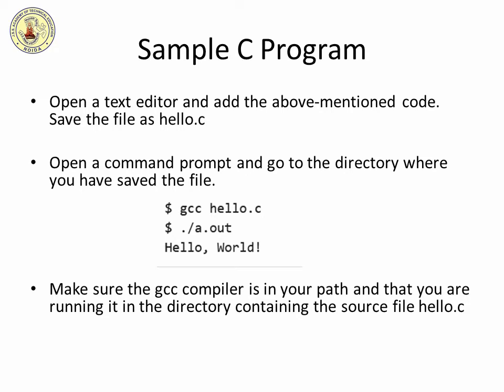Let us see how to save the source code in a file and how to compile and run it. Open a text editor and add the above-mentioned code. Save the file as hello.c. Open a command prompt and go to the directory where you have saved the file. Type gcc hello.c and press enter to compile your code. If there are no errors, the command prompt will generate an a.out executable file. Type a.out to execute your program and you will see 'hello world' printed on the screen. Make sure the gcc compiler is in your path and that you are running it in the directory containing the source file hello.c.